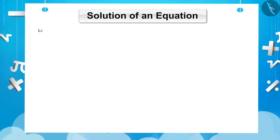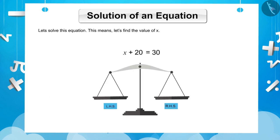Now, let us solve this equation. That is, let us find the value of X. In order to do this, first we will separate the variable from the remaining terms. In LHS, we have X plus 20 and in RHS we have 30. What should we do now?